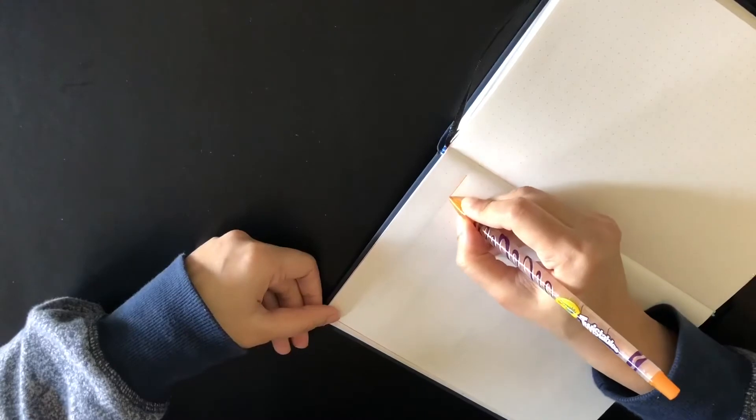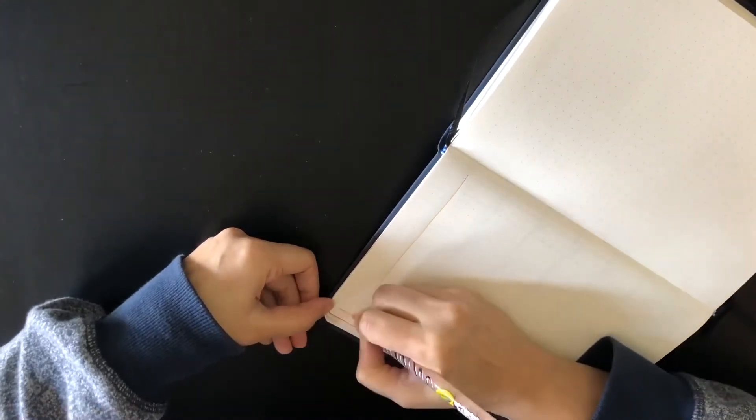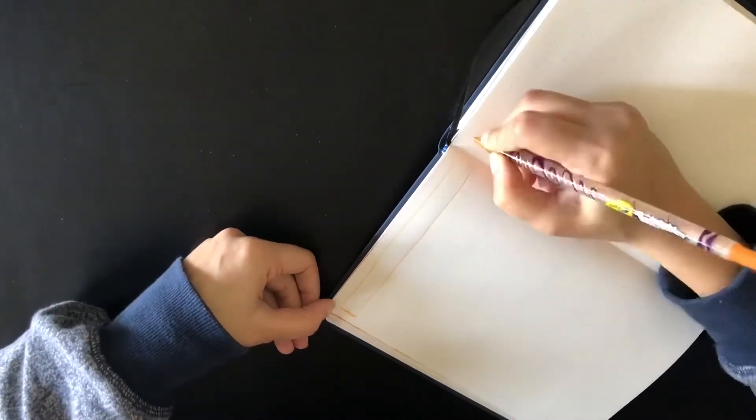On the next page, I'm preparing a habit tracker and a mood tracker. For the header, I'm highlighting with orange.